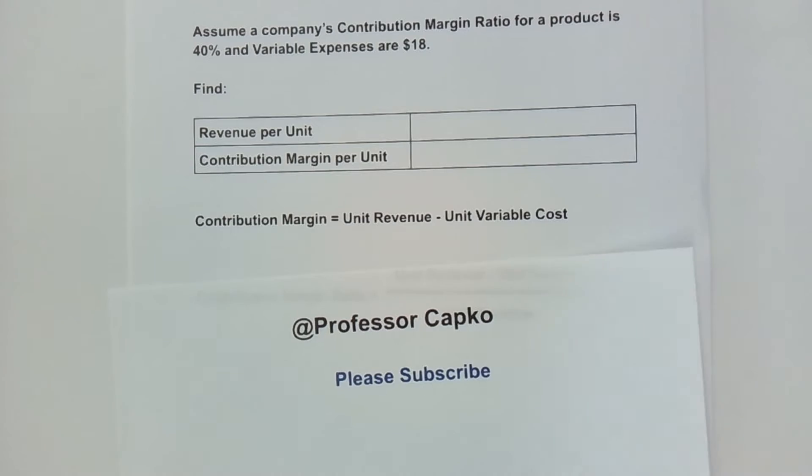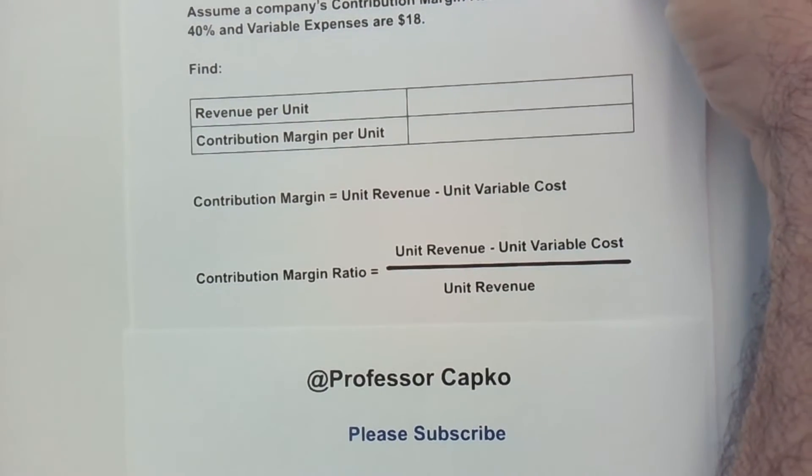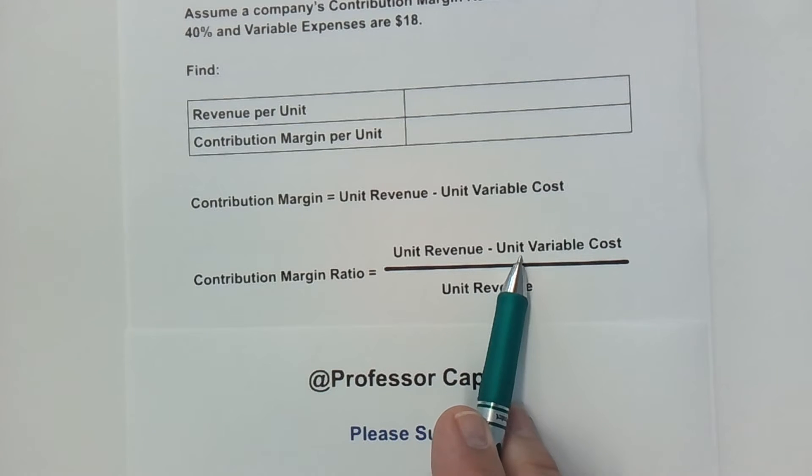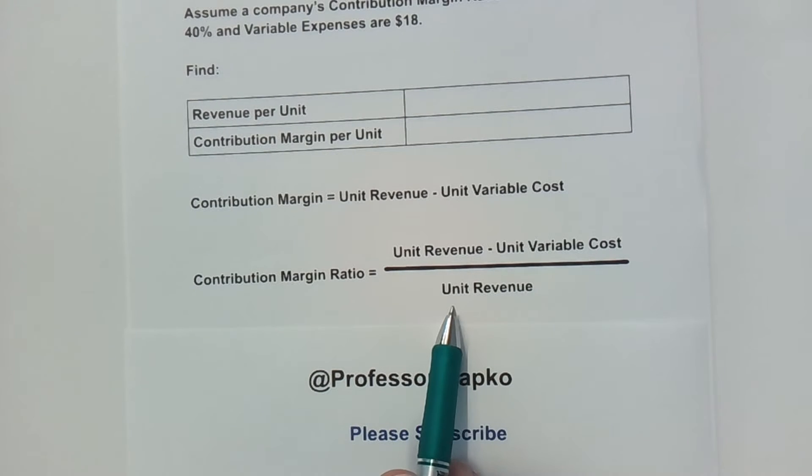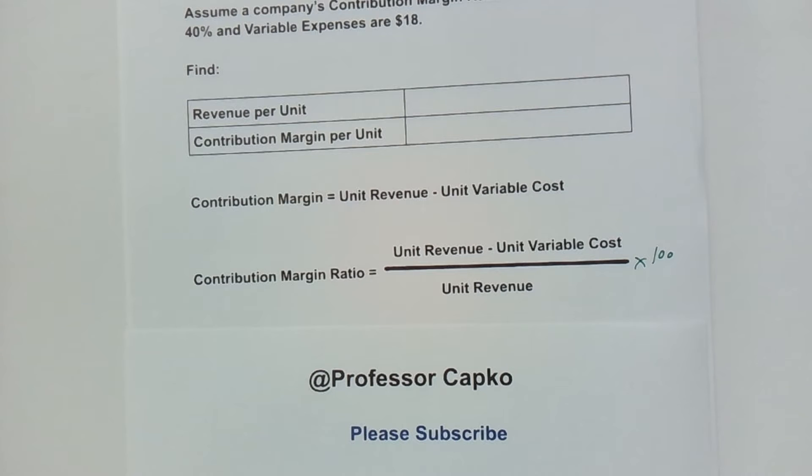Also, there is something called a contribution margin ratio. This gives us a percentage, and it's unit revenue minus the unit variable cost divided by the unit revenue.